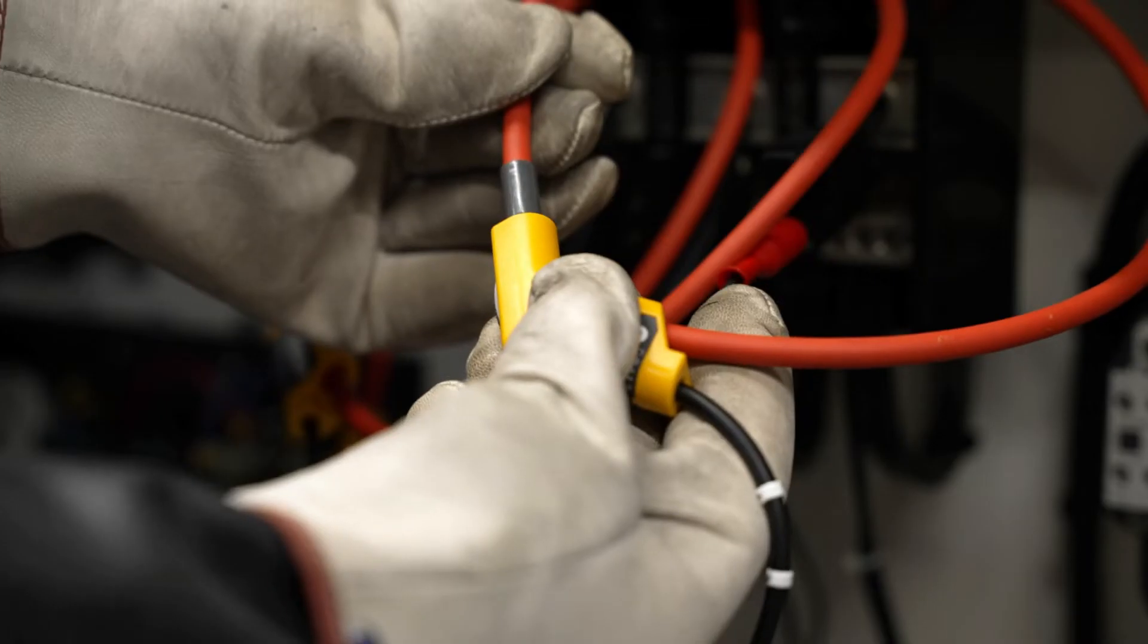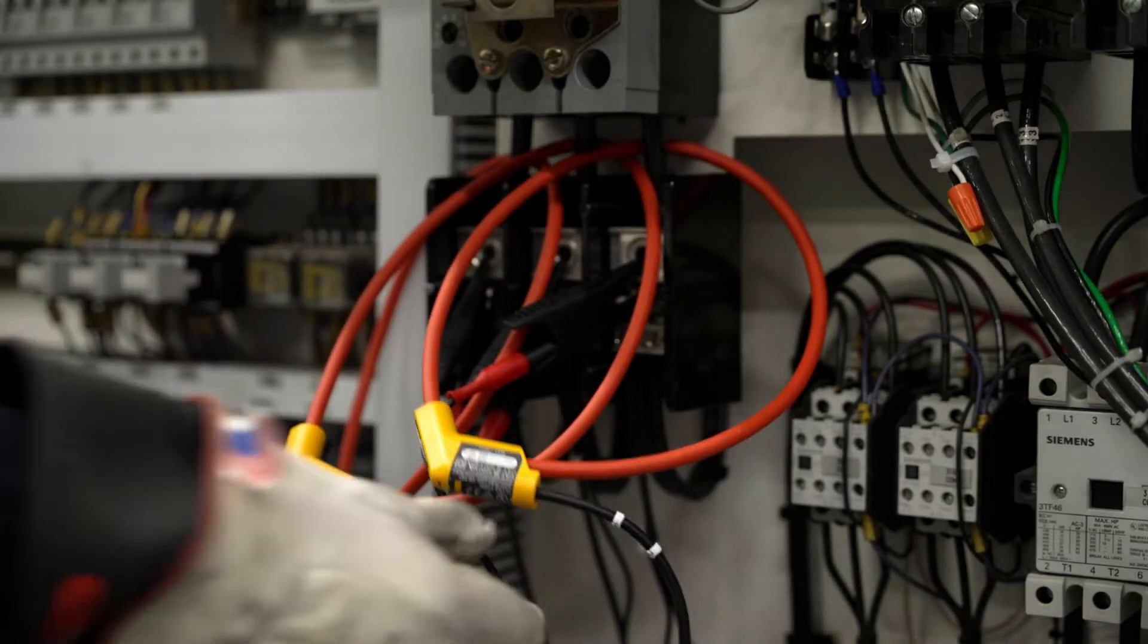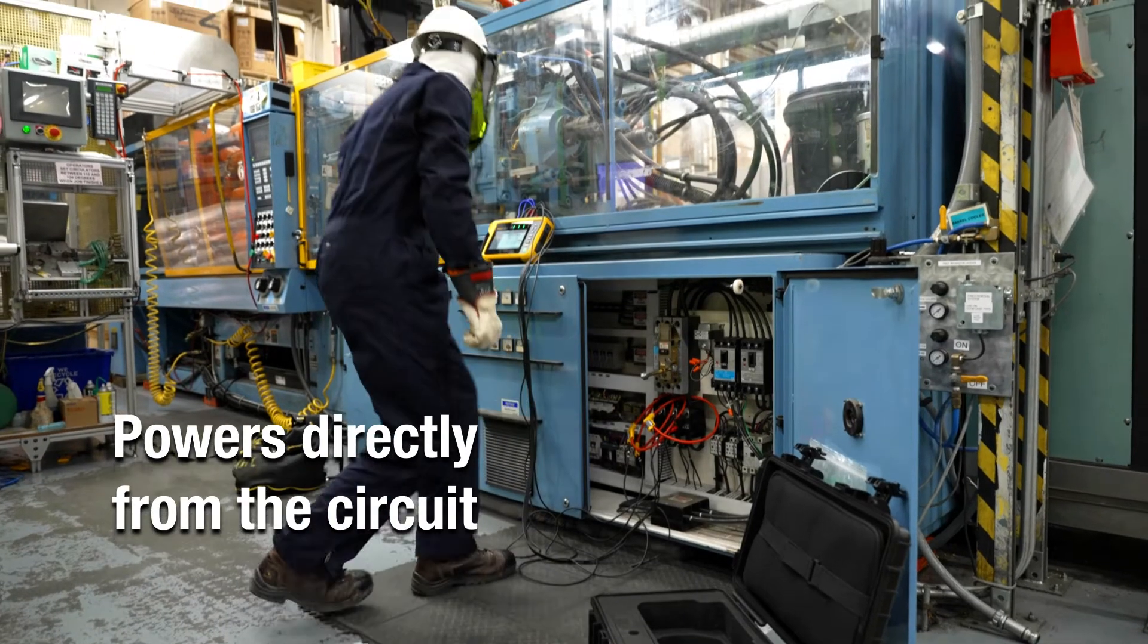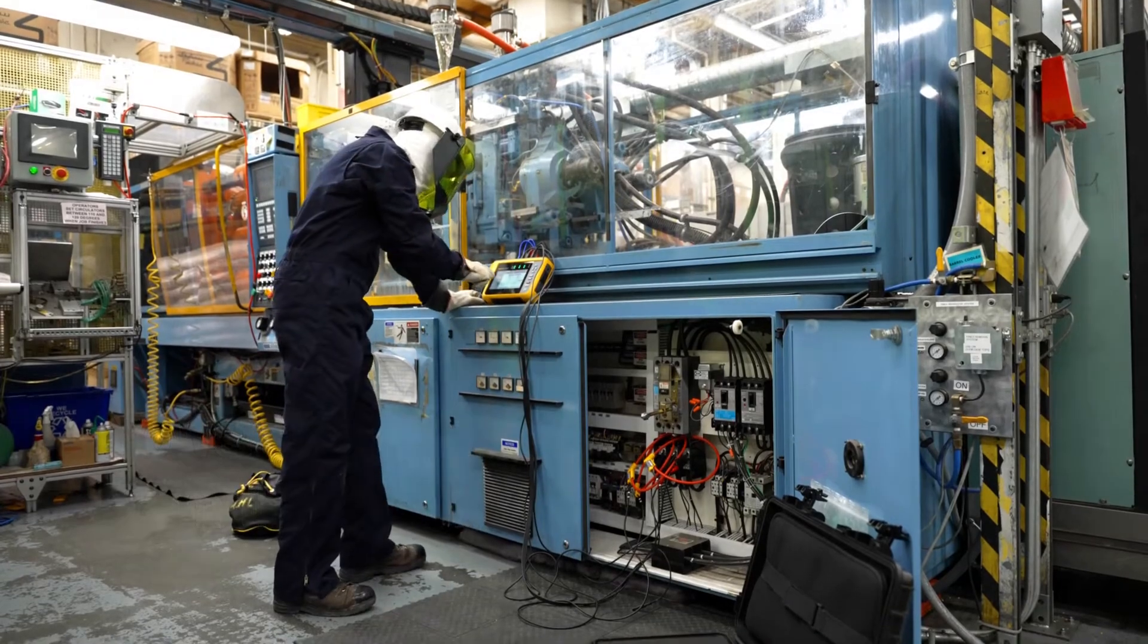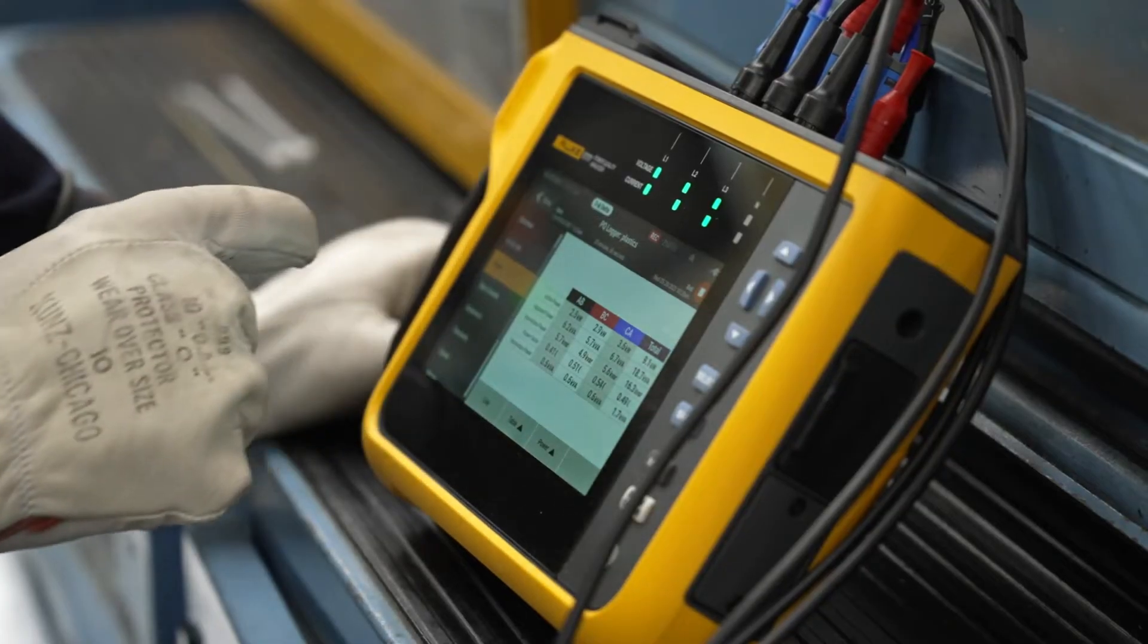The Fluke 1770 Series conveniently powers directly from the circuit you are measuring, so you won't need an electrical outlet or have to worry about failing batteries.